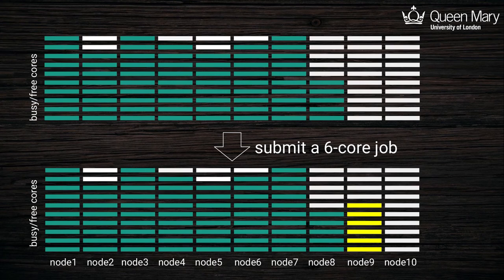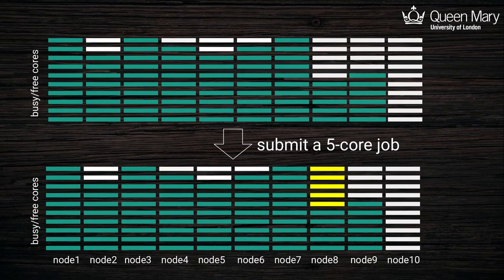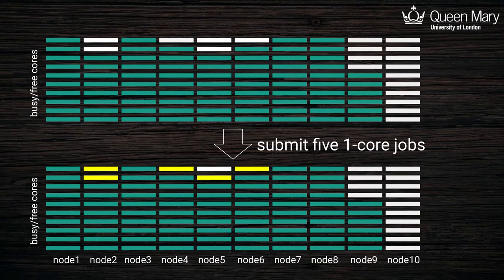In this example, a user submits a 6-core job. It can't fit on any of the partially filled nodes, so it goes on the first available node with 6 free cores — that's node 9. The next job is a 5-core job. This could fit on node 8 or node 10, but the scheduler tries to fill up nodes first; otherwise a larger job would get blocked from running for a long time. Node 8 has 5 free slots, so it gets executed there. Finally, a bunch of single 1-core jobs are placed filling up nodes similarly.